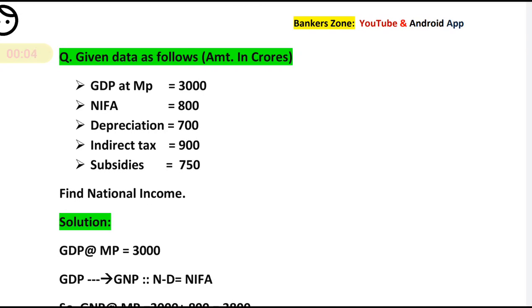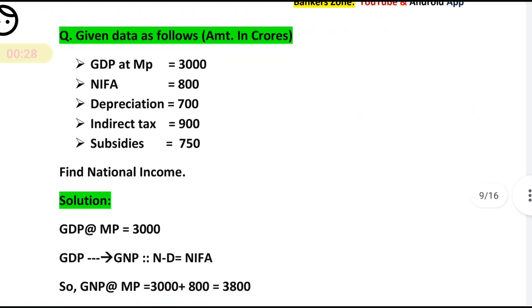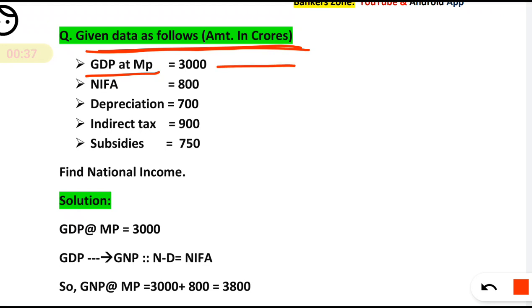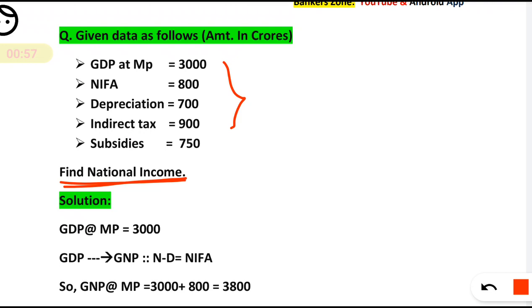Hello friends, here we will discuss a case study or problem based on GDP. This type of problem is for three marks and is very easy — you don't have to calculate anything complicated, everything is given. The given data is as follows, all amounts in crores: GDP at market price is 3000, NFIA (net factor income from abroad) is 800, depreciation is 700, indirect tax is 900, and subsidies is 750. Based on that data, we have to calculate the national income.